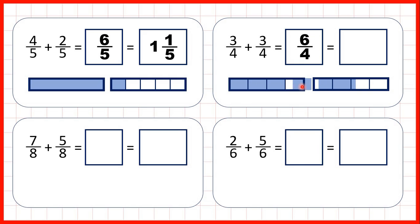Again we can push what we have together, and that makes one whole and two-quarters, so that's our mixed number. We can get that answer because six divided by four is one remainder two, or because one times four is four, and then we need two more to get six — and that's the numerator of our improper fraction.